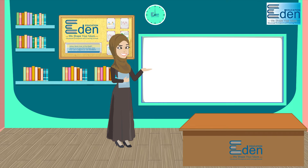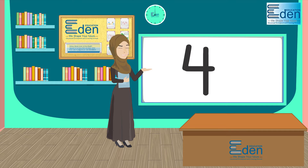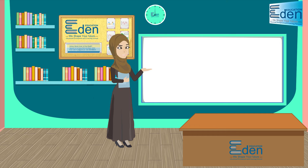How do we write the number four? Go down, across, and down some more. That's the way to make a four.